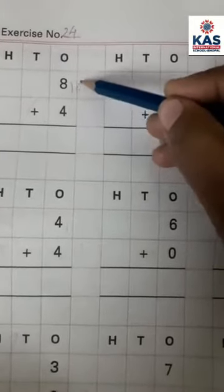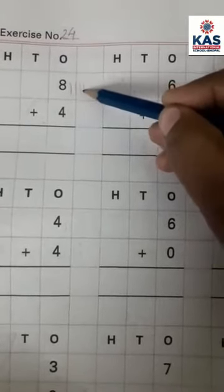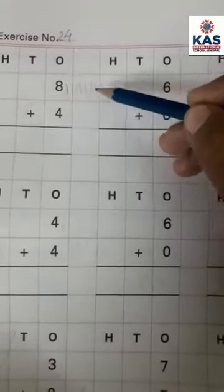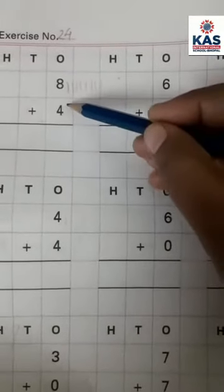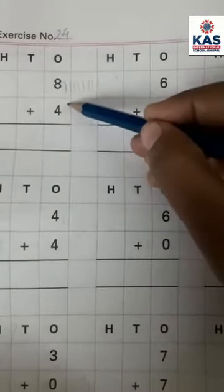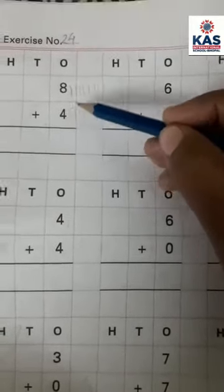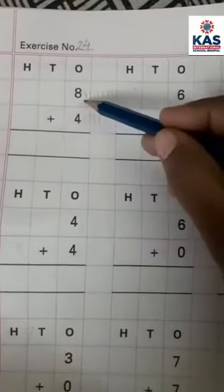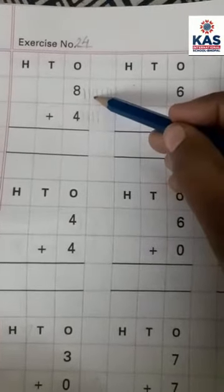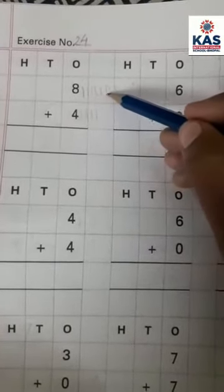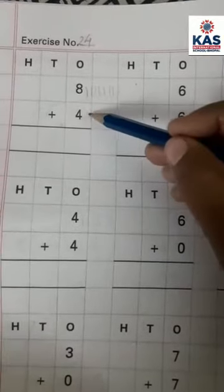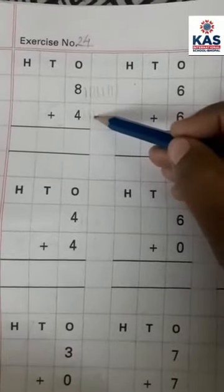8 — 1, 2, 3, 4, 5, 6, 7, 8. Then 4 — 1, 2, 3, 4. Now count all together: 1, 2, 3, 4, 5, 6, 7, 8, 9, 10, 11, 12.